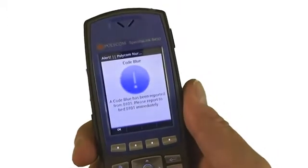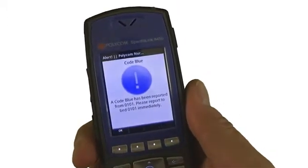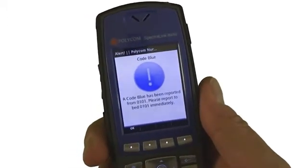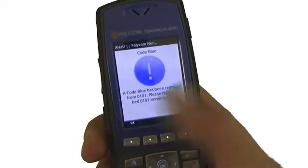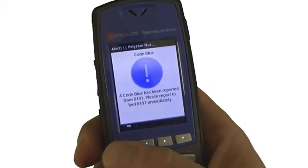You can see that information is instantly presented to the handset. You can see the visual indication. This is just an XML script so it could be any type of picture that you need. I can press OK and now it's been logged that I've acknowledged that I need to go and respond to that particular code blue alert.